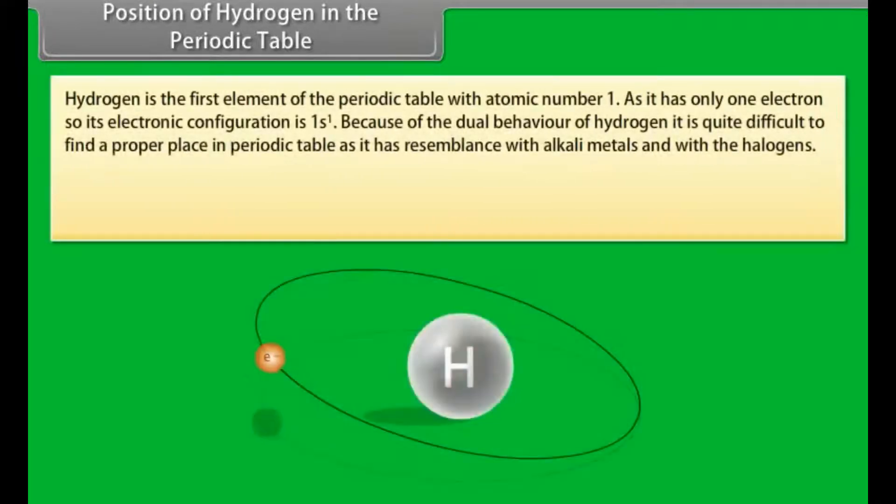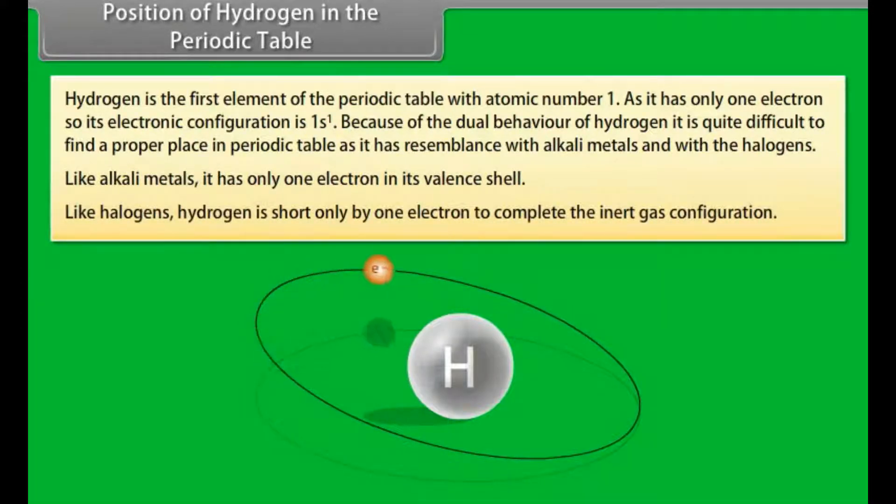Position of hydrogen in the periodic table. Hydrogen is the first element of the periodic table with atomic number 1. As it has only one electron, so its electronic configuration is 1s1. Because of the dual behavior of hydrogen, it is quite difficult to find a proper place in periodic table as it has resemblance with alkali metals and with the halogens. Like alkali metals, it has only one electron in its valence shell. Like halogens, hydrogen is short only by one electron to complete the inert gas configuration.